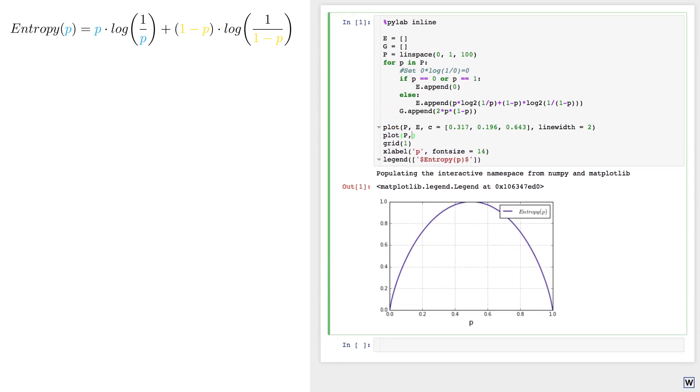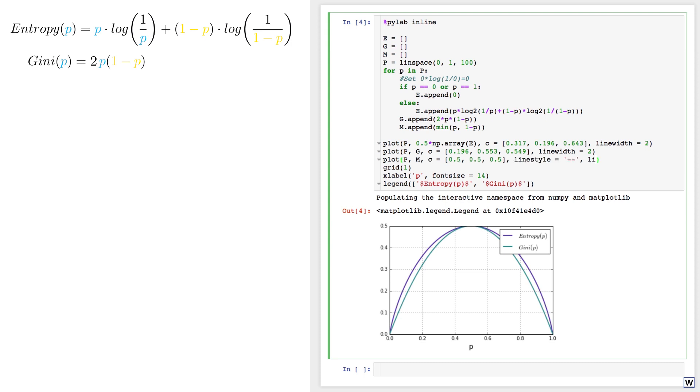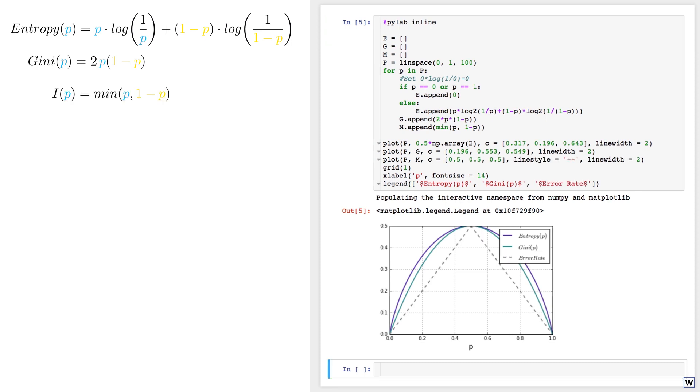In fact, if we scale down our new entropy function by a factor of 2, we see that our entropy is incredibly similar to our Gini impurity. Both curves equal 0 when our nodes contain only positive or negative examples. Both curves reach a maximum when p equals 1 half, and both curves are concave.